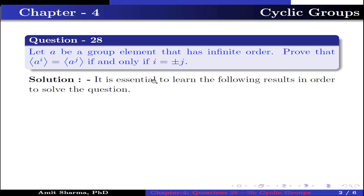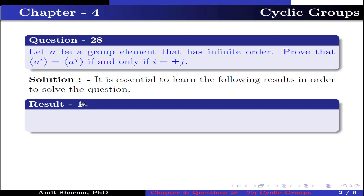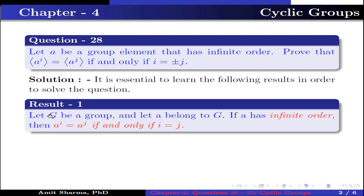It is essential to learn the following results in order to solve the question. Result number 1: let g be a group and let a belong to g. If a has infinite order, then a to the power i equals a to the power j if and only if i equals j.